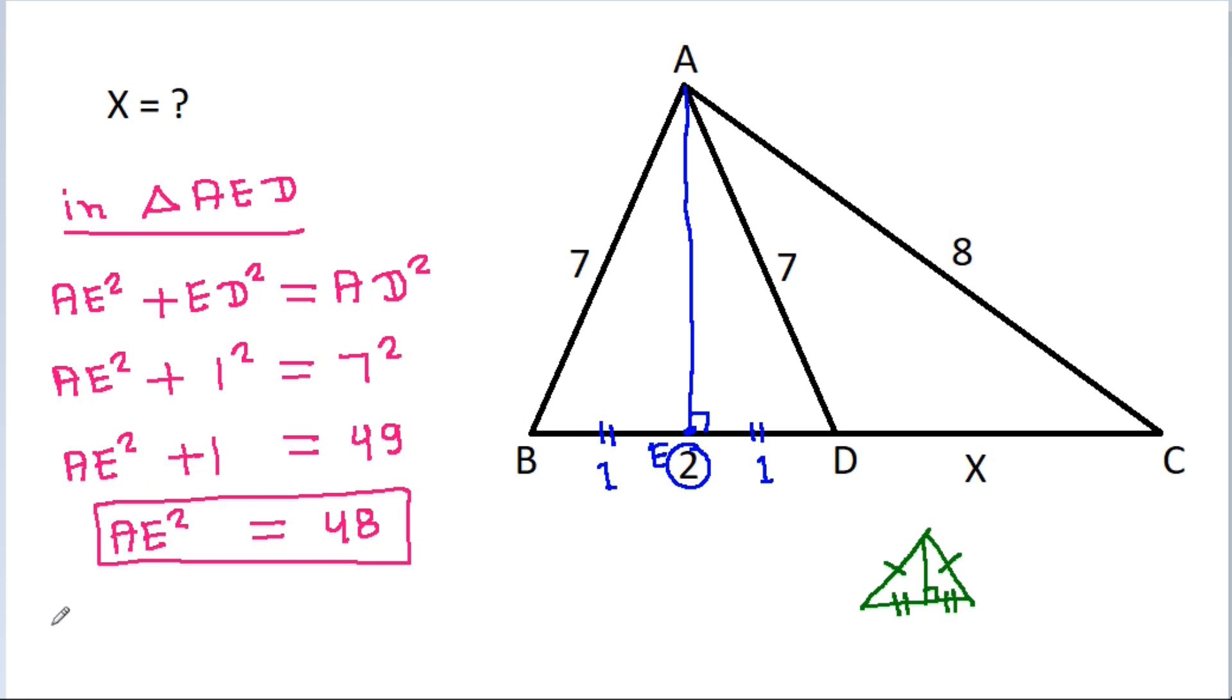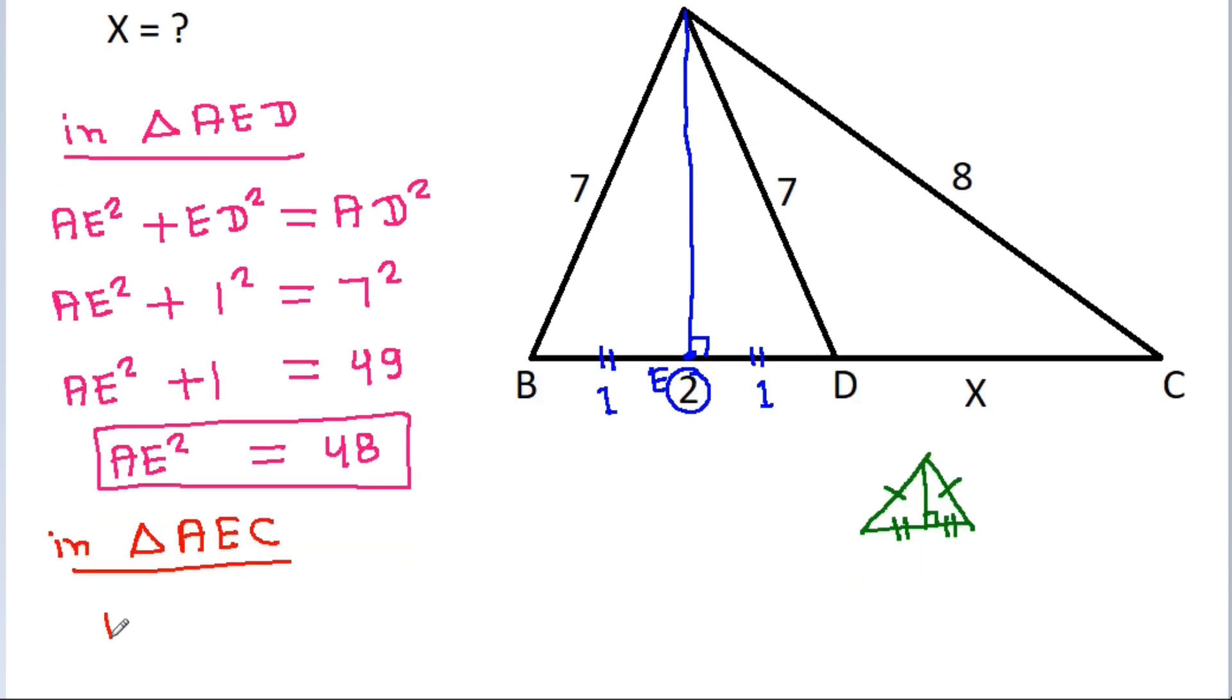And now, in triangle AEC, AE squared plus EC squared will equal AC squared. And 48 plus EC squared equals AC is 8 squared.